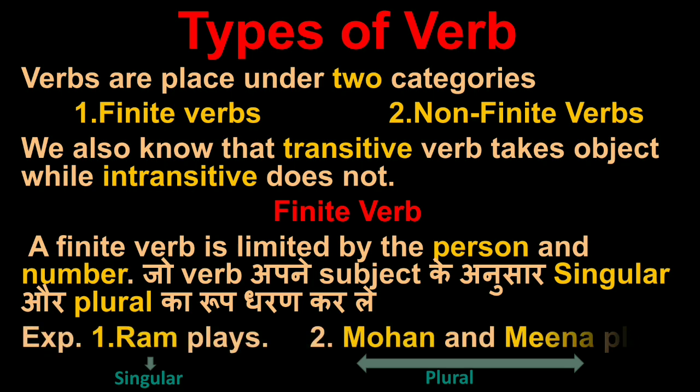For example, Ram plays - Ram is singular, so the verb is singular. And Mohan and Meena, because of the conjunction 'and' added, it is plural, so the verb is also plural. These all change in finite verbs. The verb changes according to the subject's number and person.